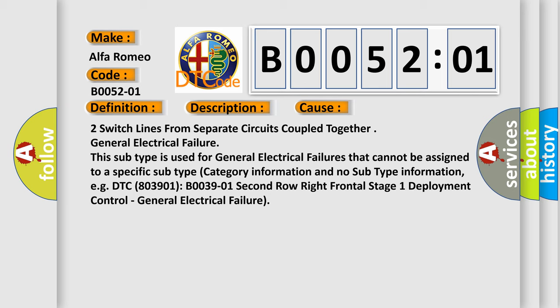This subtype is used for general electrical failures that cannot be assigned to a specific subtype category information and no subtype information, e.g. DTC B0039-01, second row right frontal stage 1 deployment control, general electrical failure.